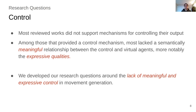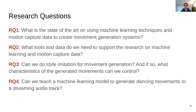As a result of this, we developed our research questions around the lack of meaningful and expressive control in movement generation. We devised four research questions. The first is: what is the state of the art in using machine learning models and motion capture data to create movement generation systems? Our second research question deals with what tools and data we need to support the research. Our third research question asks whether we can do style imitation for movement generation and what characteristics of the generated movements we can control. Finally, our fourth research question asks whether we can teach a machine learning model to generate dance movements to a streaming audio track.